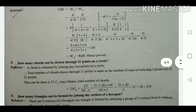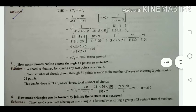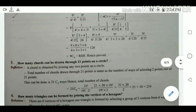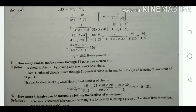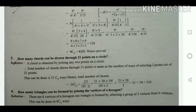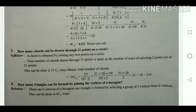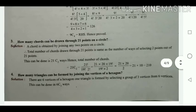Taking 8! as common, we get 8! × [1/(4! × 4!) + 1/(3! × 5!)]. Rewriting with 4! = 4 × 3! and 5! = 5 × 4!, and taking 3! and 4! as common, we get 8!/(4! × 3!) × (1/4 + 1/5). Taking LCM of 4 and 5 gives 20, so we get 8!/(4! × 3!) × (9/20).